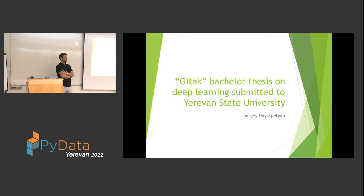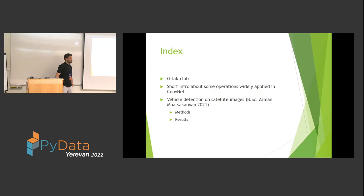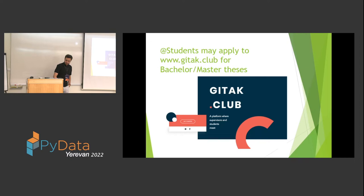I'm Sergei. Today I'm going to talk about a bachelor thesis submitted to Irvine State University — not my thesis, but one from students who applied for this topic through GitHub Club. I'll talk briefly about GitHub Club, then about basic operations in CNNs — convolutional neural networks — and then the main topic: detecting vehicles from satellite images. This was supervised by me, submitted by a student named Armin.